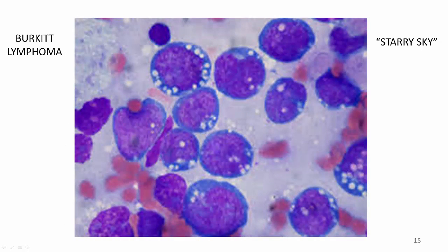Histologically, the Burkitt lymphoma tumor consists of sheets of a monotonous population of medium-sized lymphoid cells with high proliferative and apoptotic activity. The so-called starry sky appearance is due to the Burkitt cells containing numerous intracytoplasmic lipid droplets. As some cancer cells die, their lipid is phagocytosed by benign macrophages, which become the stars.